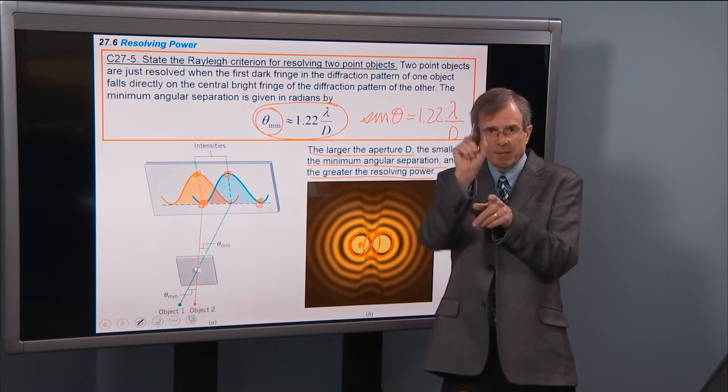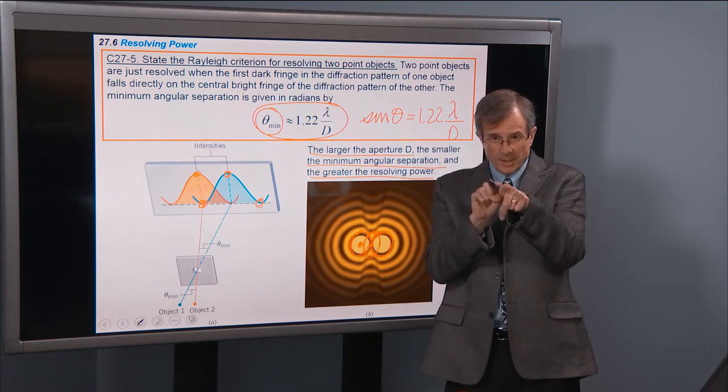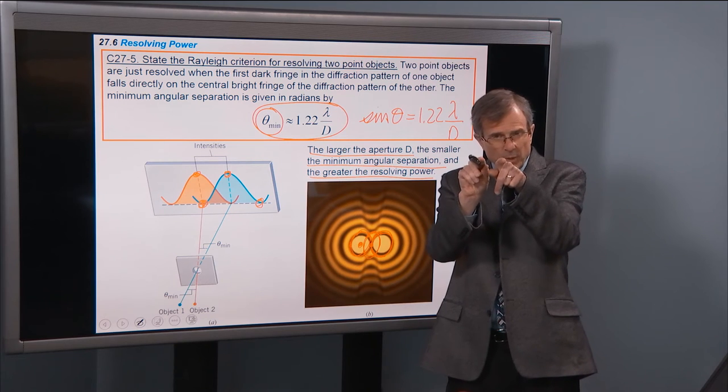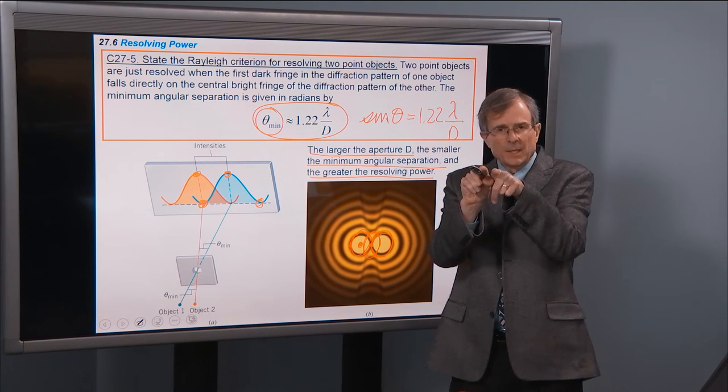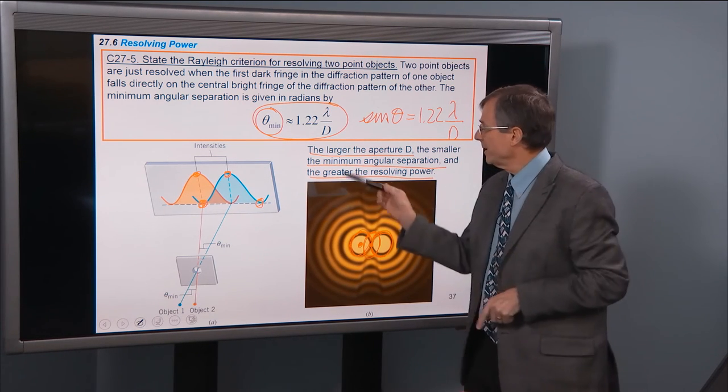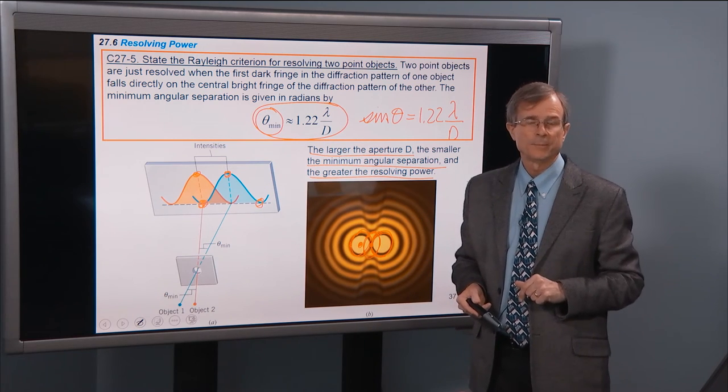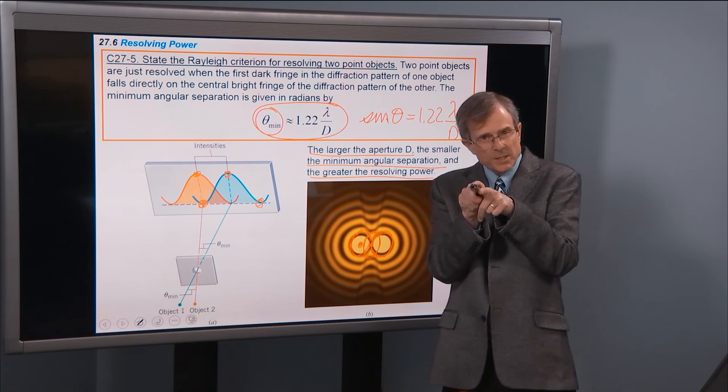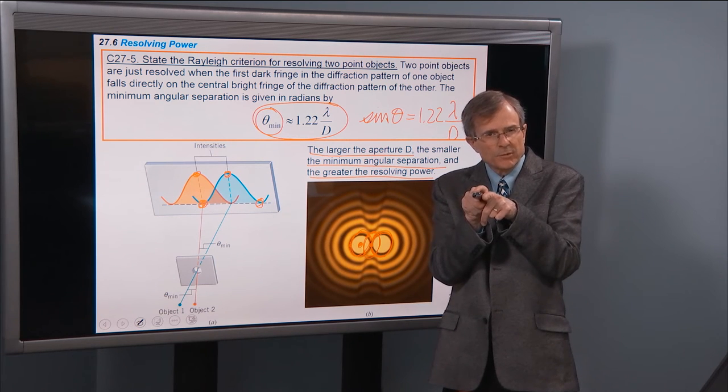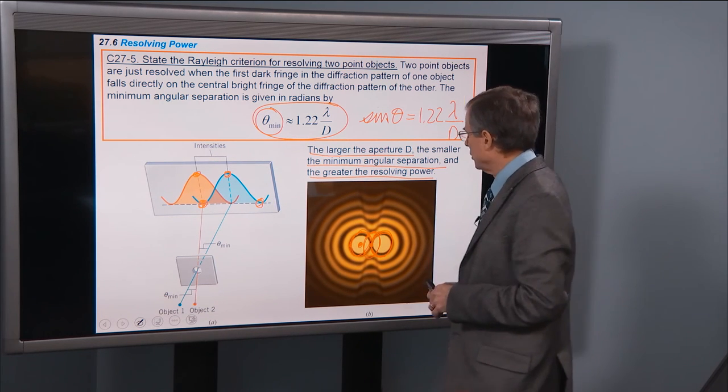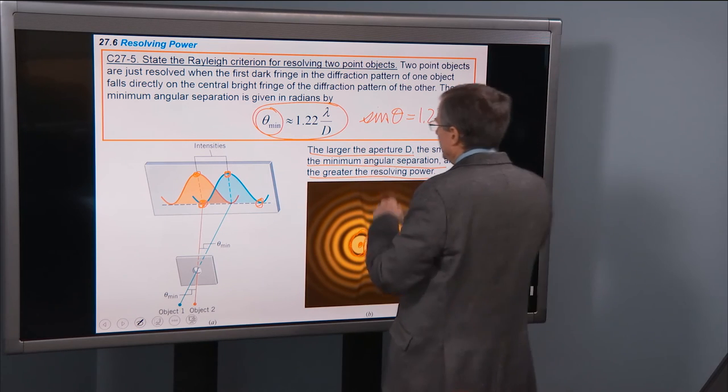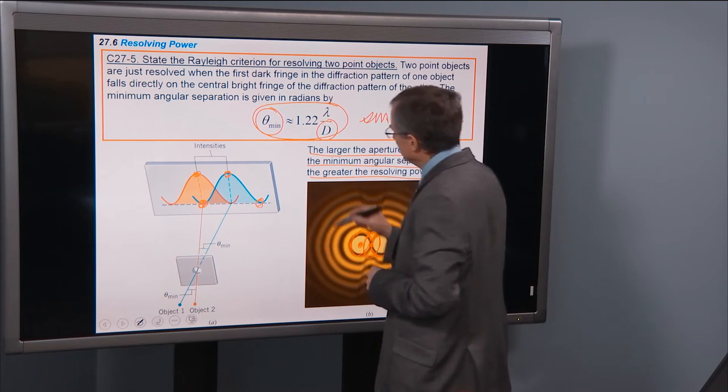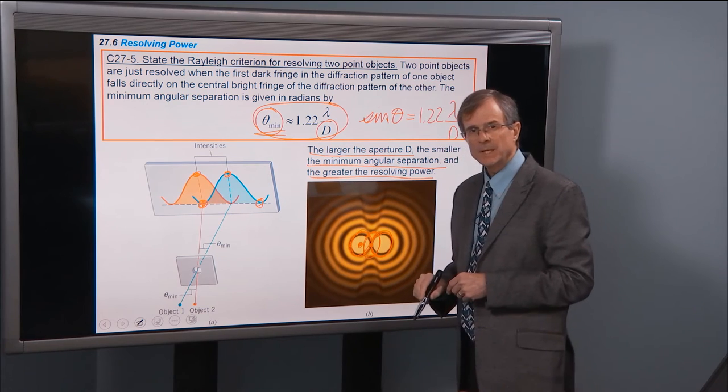This is the minimum angular separation between two things. So you're going to say, I got a star over there and a star over here, and I got an angle that's one degree between them. Can I resolve them? If that angle is greater than theta min, then you can resolve them with light of wavelength lambda. If that angle is less than theta min, then you can't resolve those two stars.